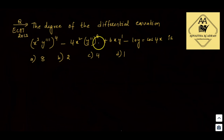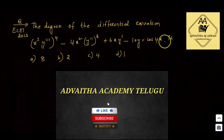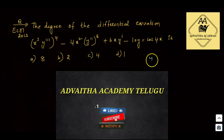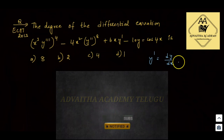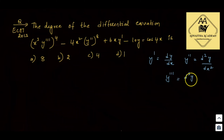Next question: find the degree of x³ · (y''')⁴ - 4x² · (y'')⁸ + 6x·y' - 10y = cos4x. Note: y' = dy/dx, y'' = d²y/dx², y''' = d³y/dx³.